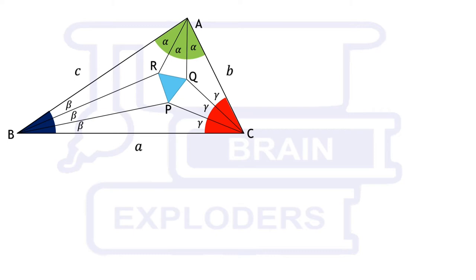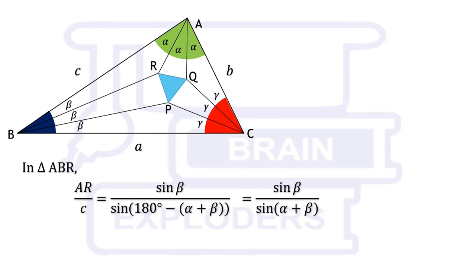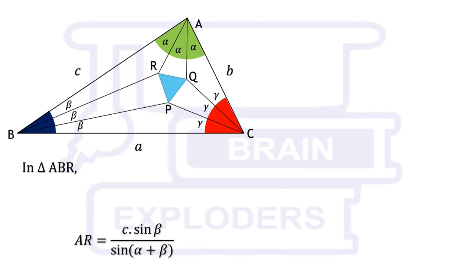Let's solve the problem for a general case. In triangle ABR, AR over c equals sin beta over sin 180 minus alpha plus beta because angle opposite to side c is 180 minus alpha plus beta. We know that sin 180 minus theta equals sin theta. So we get AR equals c sin beta over sin alpha plus beta. Similarly, in triangle ACQ, AQ equals b sin gamma over sin alpha plus gamma.